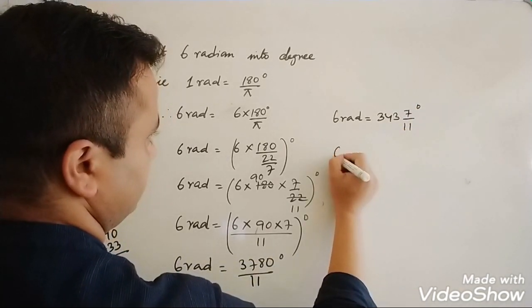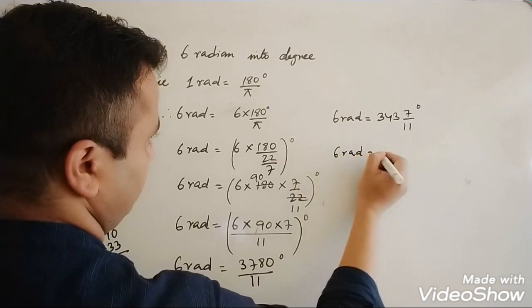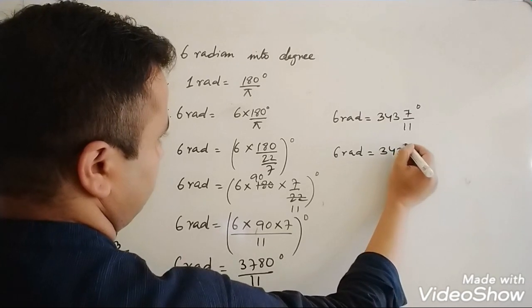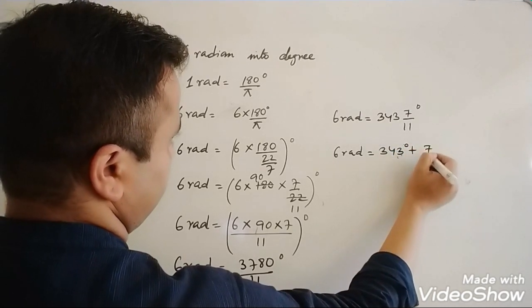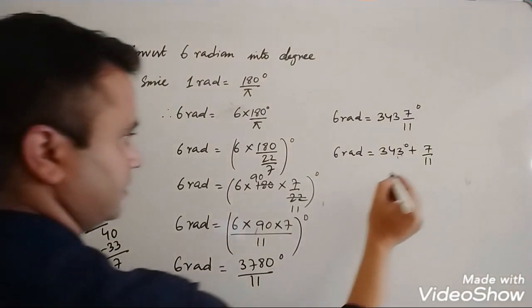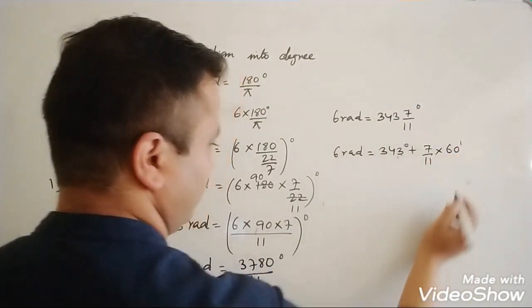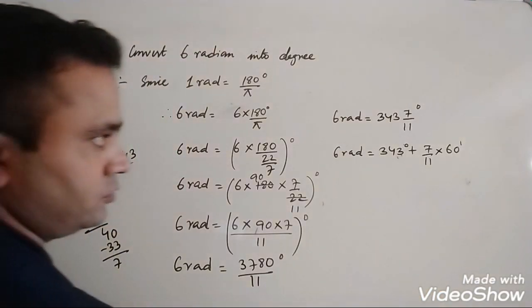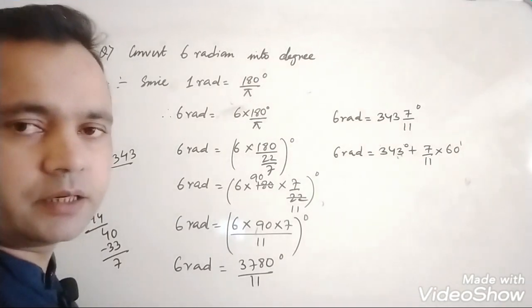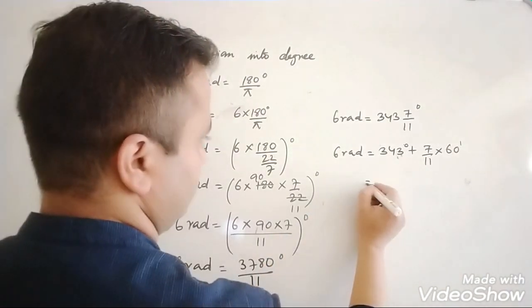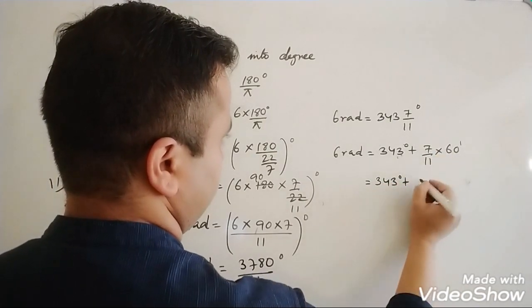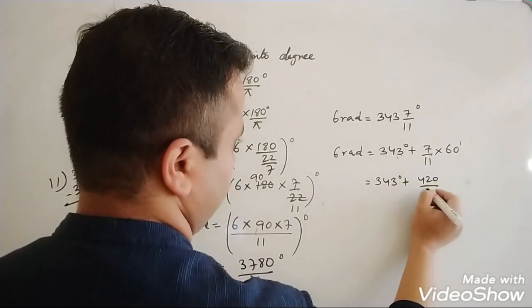After that, 6 radians equals 343 degrees plus 7/11. Now separate the whole number and the fraction: 343 degrees plus 7/11. Now convert the fractional degree into minutes, because 1 degree equals 60 minutes. So 7/11 degrees equals 7/11 into 60, which gives 420 divided by 11 minutes.